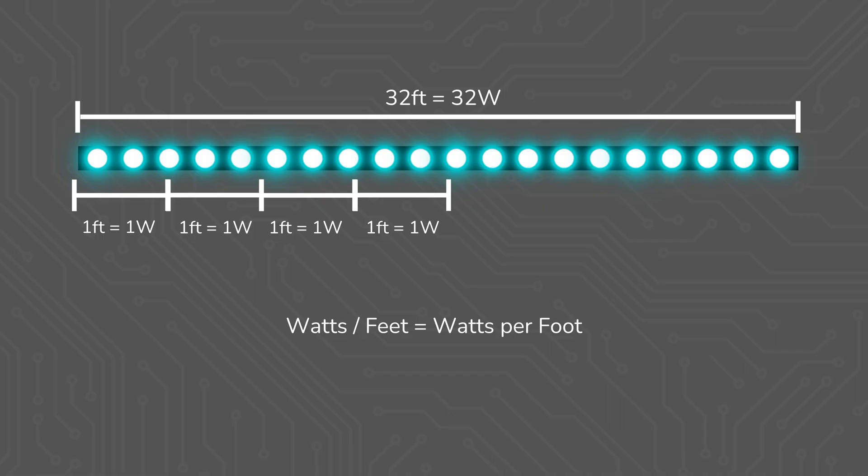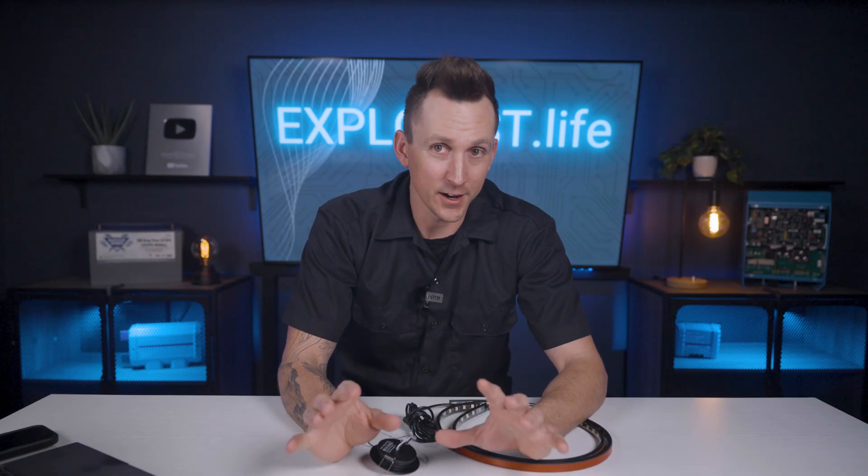For this, it's safe to say that you could just take the 32 watts for the whole roll, divide by 32 feet in the roll, which conveniently gives us one watt per foot. Now this is pretty granular, and I don't know that many people will take the time to do it, but if you wanted to, well that's how.